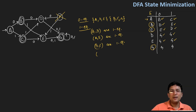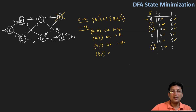After this, I'll take another pair: B and G. B goes to D on getting zero, and G goes to G. So D and G are not in the same set — D is in one set and G is in another. So they are not one equivalent. This means we can segregate B and C into one set and G into a different set. This is the outcome of one equivalence.